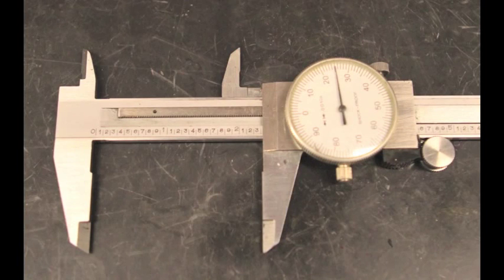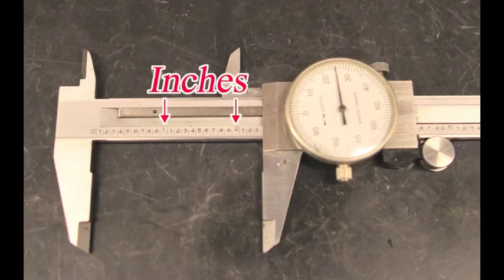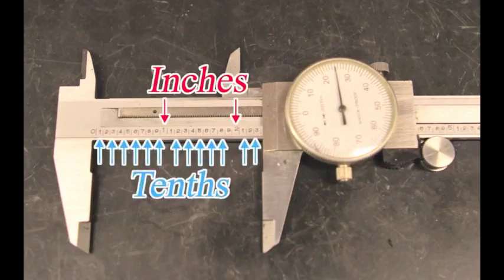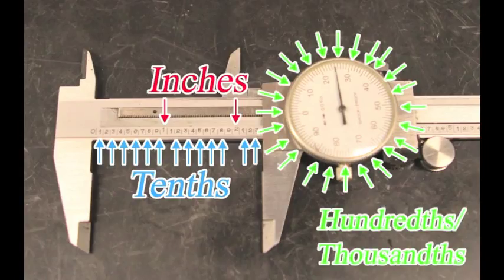The calipers we use can measure at three decimal places. The markings on the body display whole inches and tenths of inches. Whole inch increments are raised on the scale. Tenths can be found in between the inch measurements. The last two decimal places are found on the dial scale.